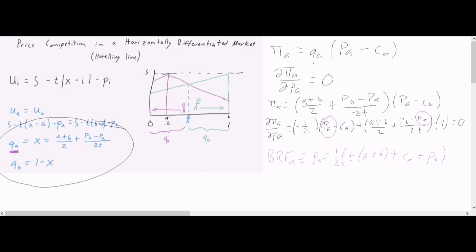We're going to follow very similar steps to get a best response function for firm B. We know that the profit for firm B is equal to, so the quantity for firm B is 1 minus the quantity for firm A, A plus B over 2 minus PB minus PA over 2T. There's quantity, times price minus cost per unit. All right, so there's firm B's profit.